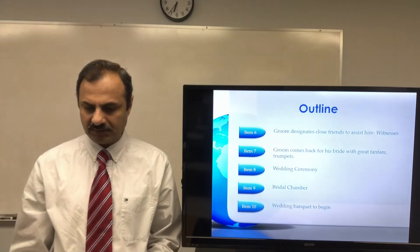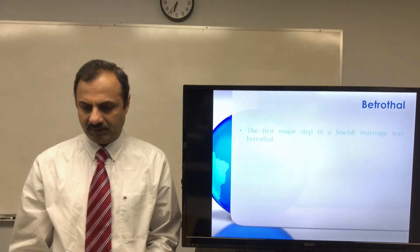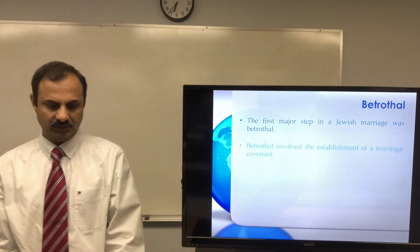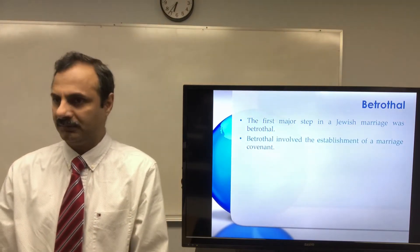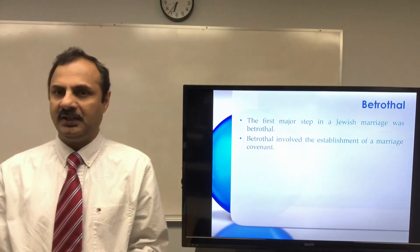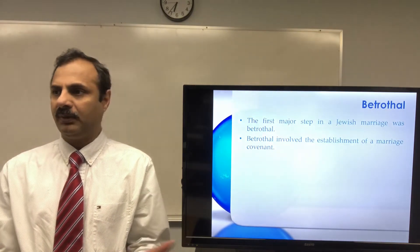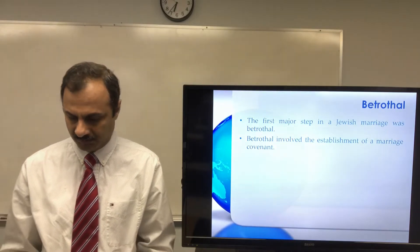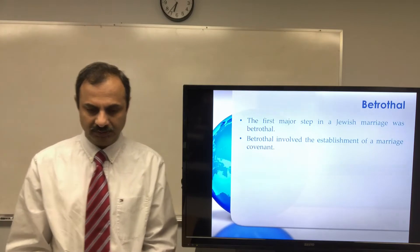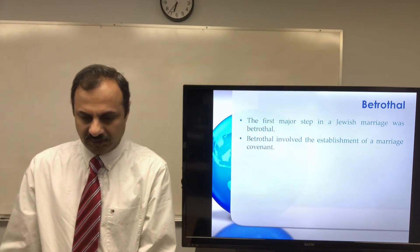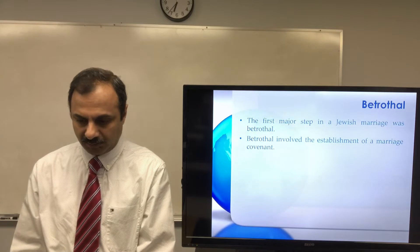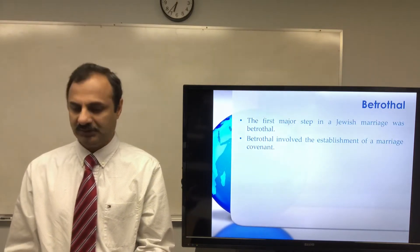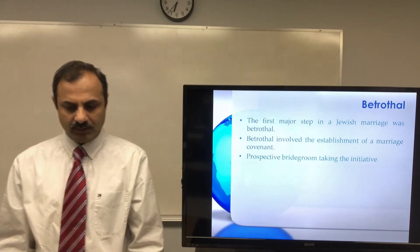The first major step in a Jewish wedding was the betrothal. You remember Mary and Joseph — they were betrothed — and in that custom you cannot just separate without a divorce. So it's more like a marriage, but it's the first step. Betrothal involved the establishment of a marriage covenant, which is why Joseph was thinking he would divorce her instead of just walking away.